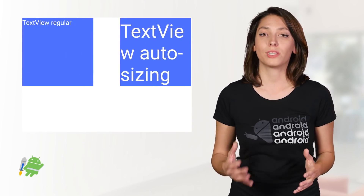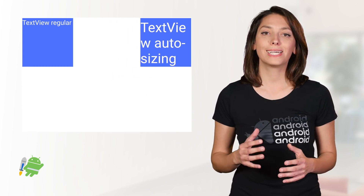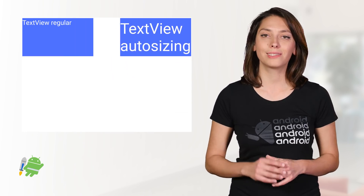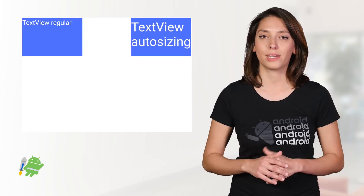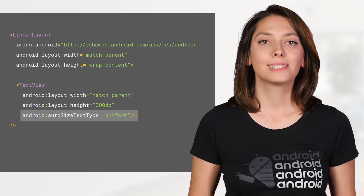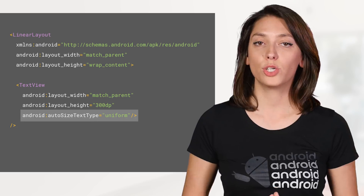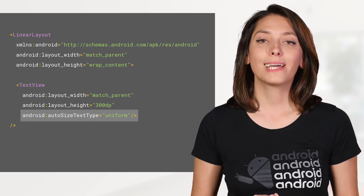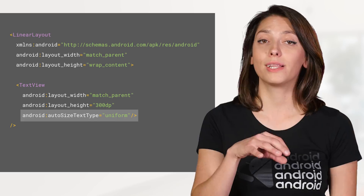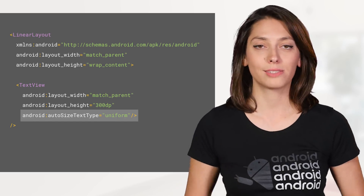With Android O and Jetpack, TextView gained a new property, AutoSizeTextType, which allows you to optimize the text size when working with dynamic content. To enable autosizing, set AutoSizeTextType to uniform. This scales text uniformly on horizontal and vertical axes, ignoring the text size attribute.